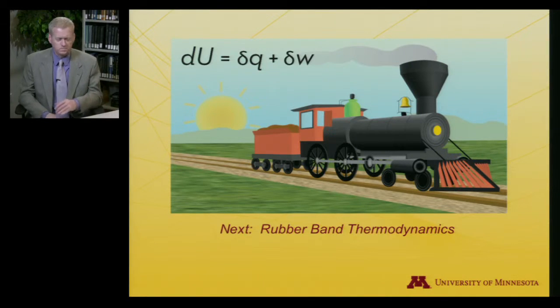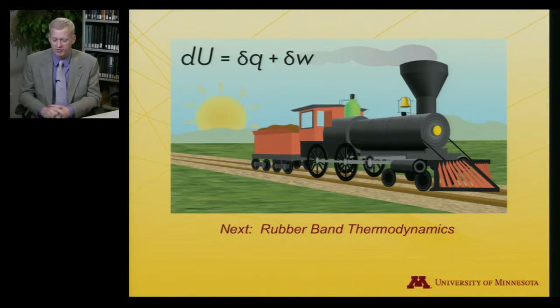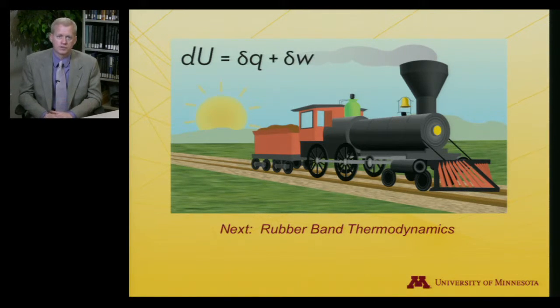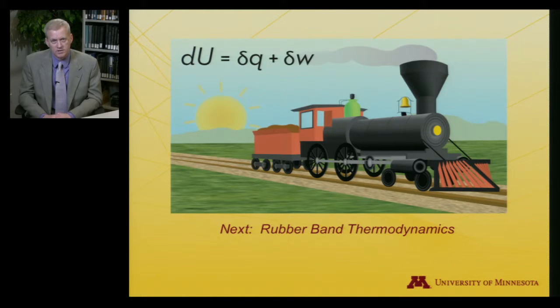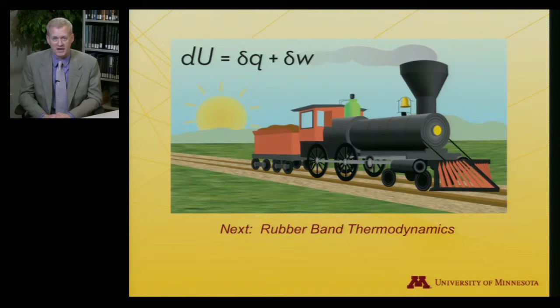That finishes up what I want to do with Maxwell relationships. What I want to look at next is a very practical example of applying all the thermodynamic principles we have developed. We began the course talking about building tools so that we could eventually build a house — well, I think we're ready to look at a house of sorts. In particular, I want to look at a rubber band and analyze its behavior from a thermodynamic standpoint. We will first look at a demonstration video of the rubber band's behavior as temperature changes, and then work out the thermodynamics behind it.